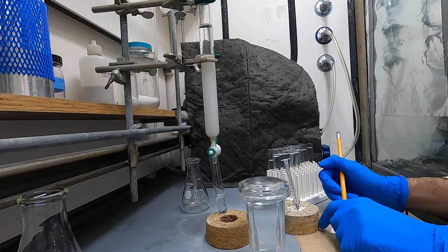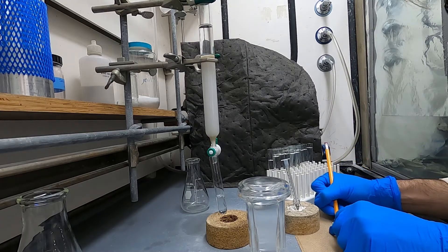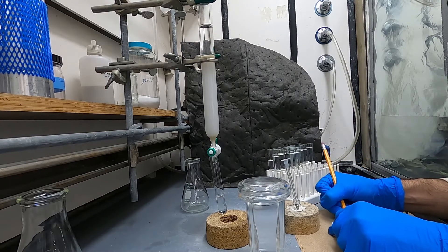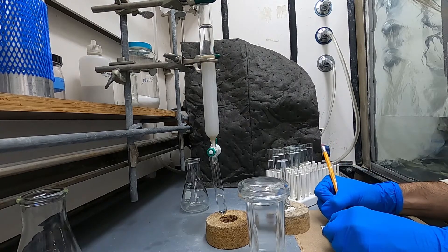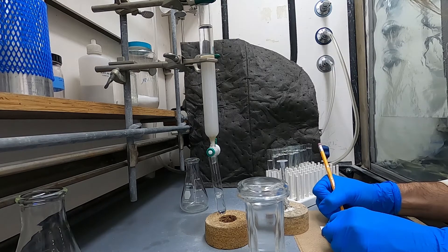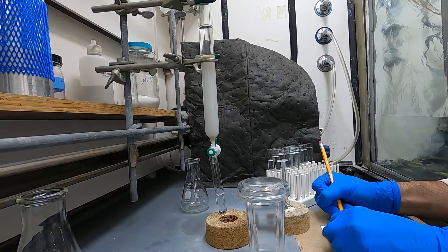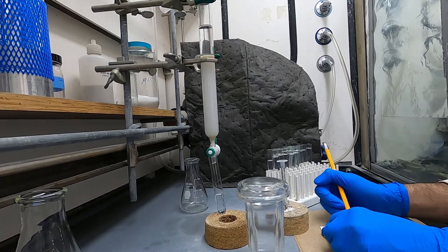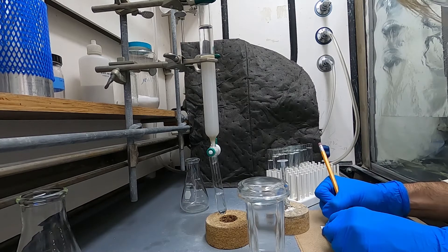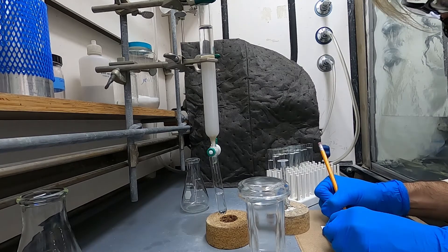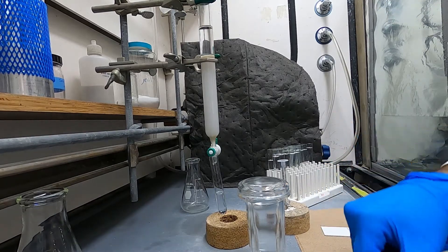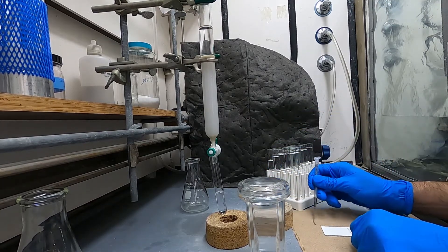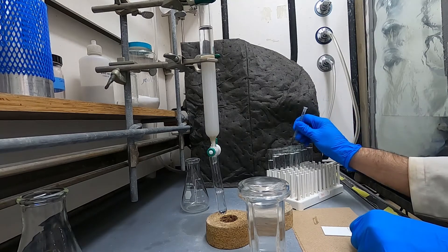Once you've collected your fractions you'll want to spot them on a TLC plate. So I did not have it pre-marked so I'm going to mark it now. I think that my material should come out probably starting in like the seventh or eighth fraction just based on the amount of silica that I used and the RF in the solvent system that I used.